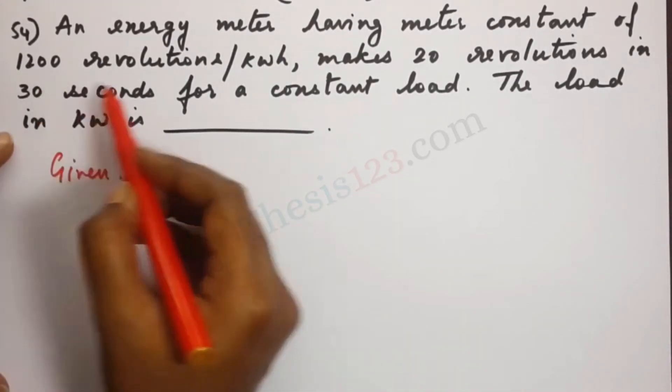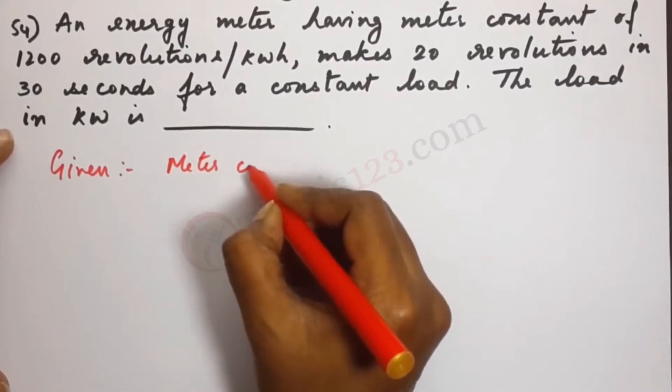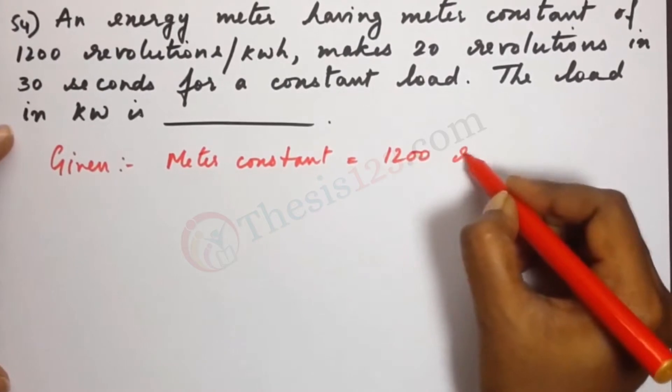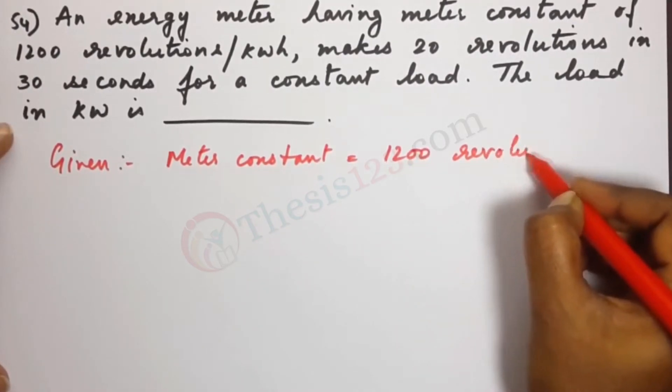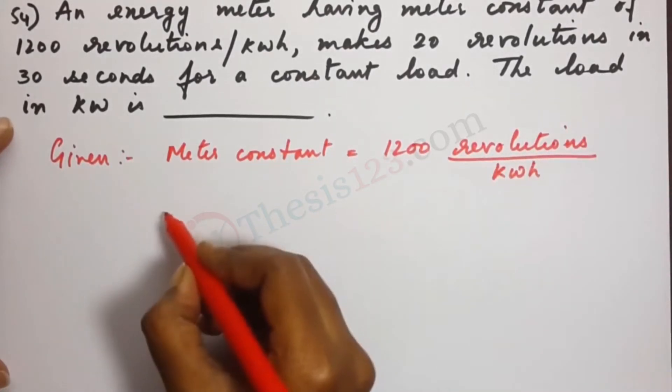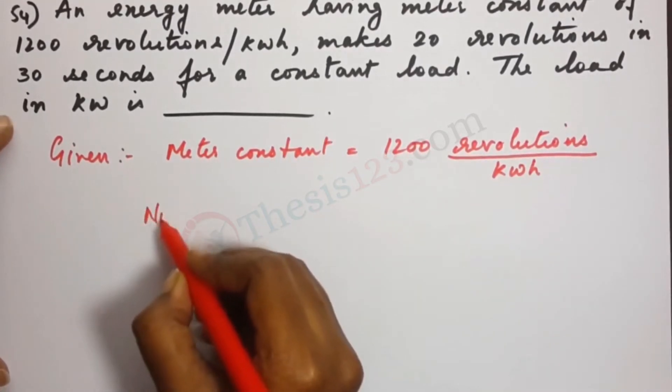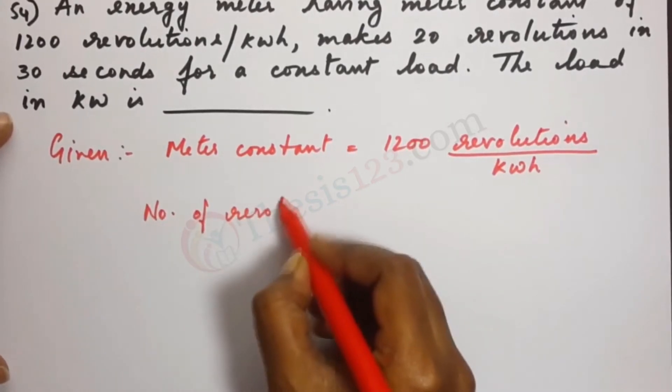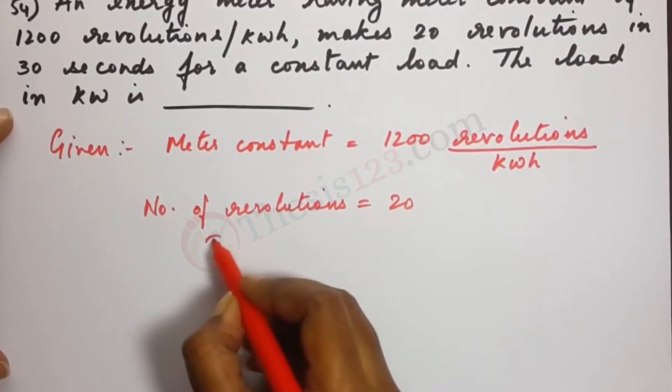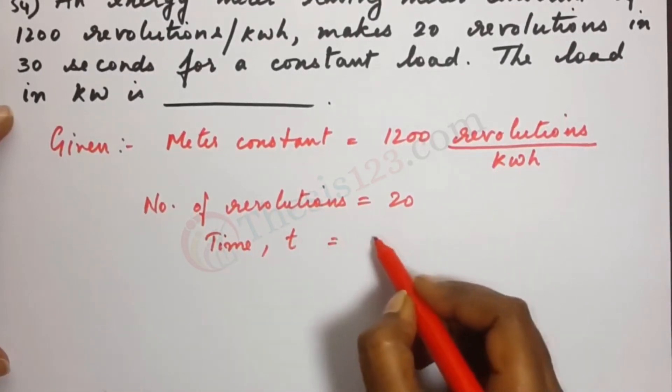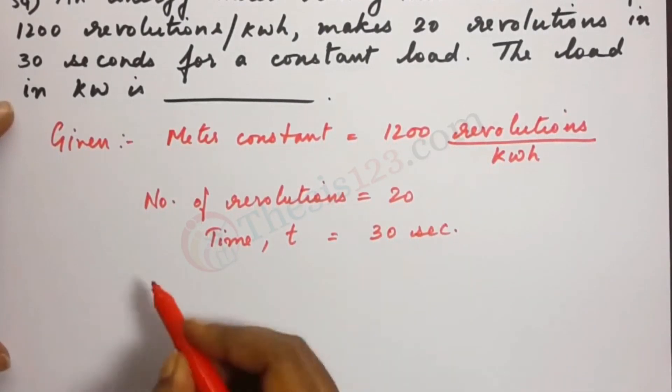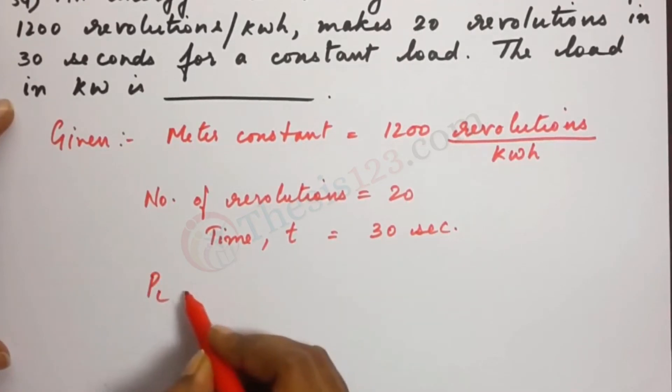We have been given the meter constant 1200 revolutions per kilowatt hour. Then we have the number of revolutions given to us, 20, time 30 seconds. Alright, so we have to find out what the load is in kilowatts.